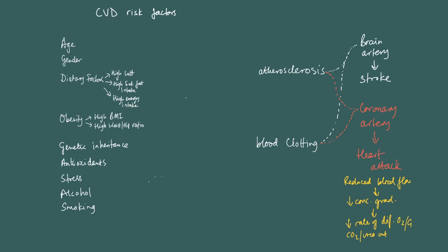The main point of this discussion is how the risk factors increase the chance of that happening — how we get from the risk factors to atherosclerosis or blood clotting. Essentially, each of these risk factors either causes atherosclerosis or blood clotting to happen, and this is the easiest way to understand this.